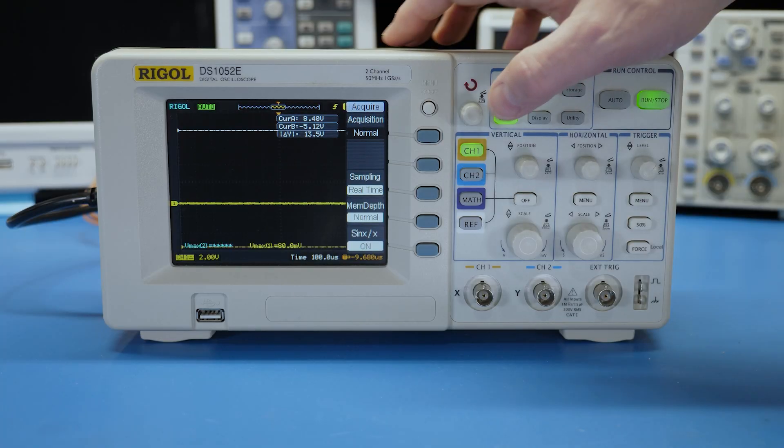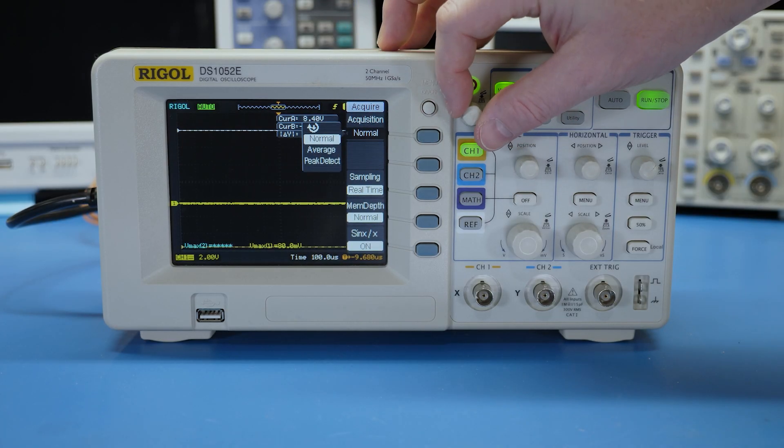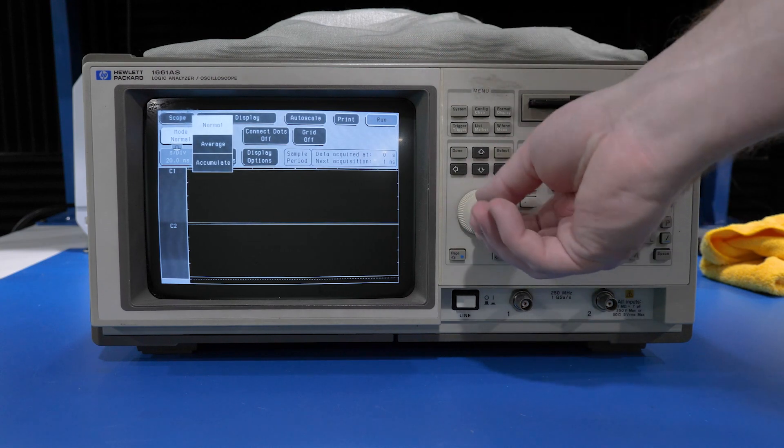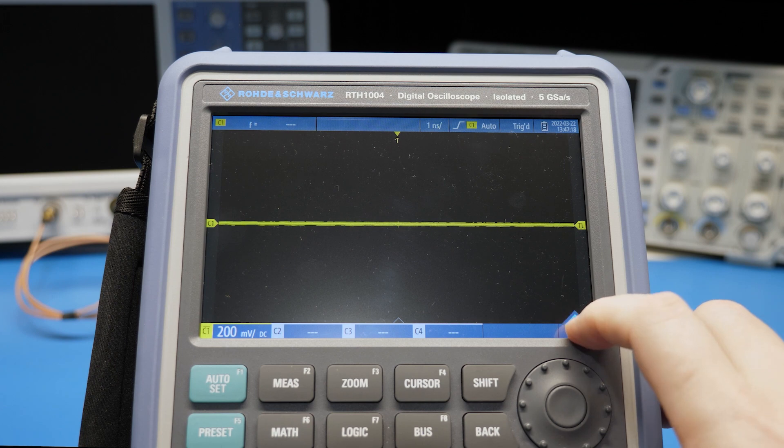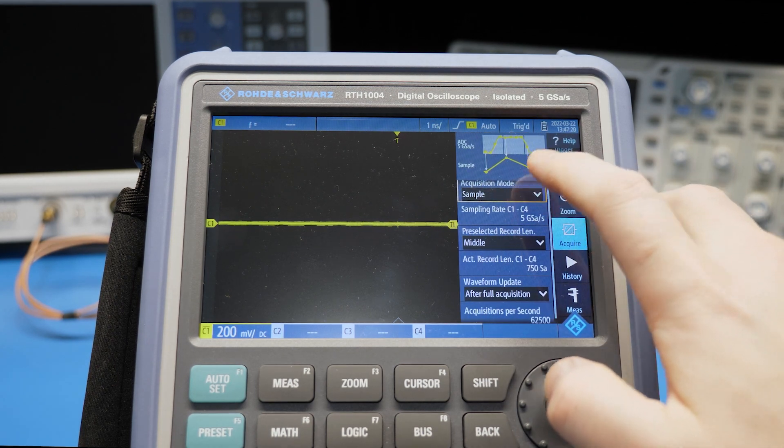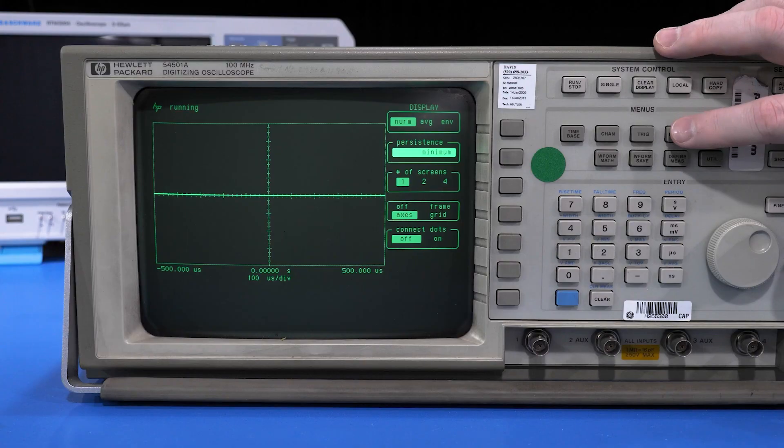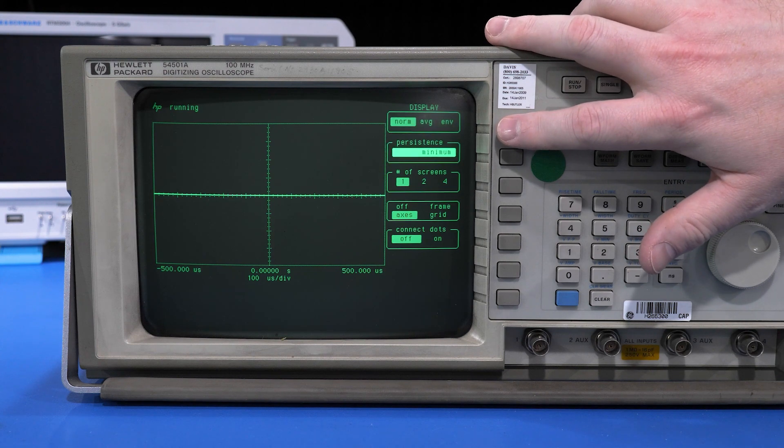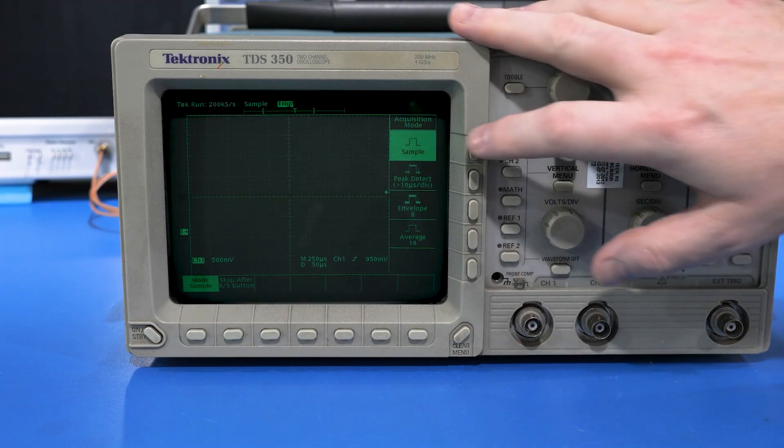And two, most digital oscilloscopes have sample, peak detect, average, and envelope modes. Check for them under the acquire or acquisition or act button. Remember, use sample or normal if you don't know what else to use. Peak detect to find glitches, and averaging to get rid of noise on repetitive signals.